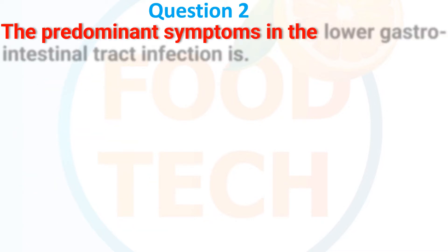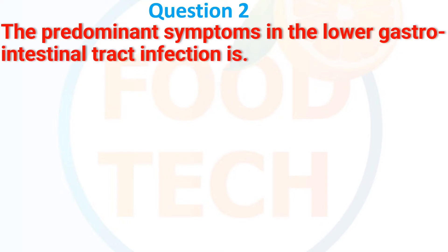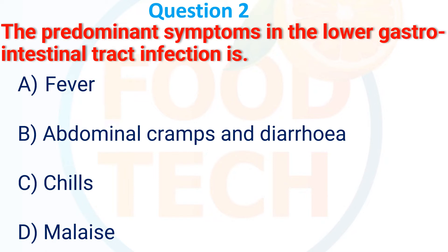The predominant symptom in lower gastrointestinal tract infection is: A, fever; B, abdominal cramp and diarrhea; C, chills; D, malaise. The answer is B, abdominal cramp and diarrhea.